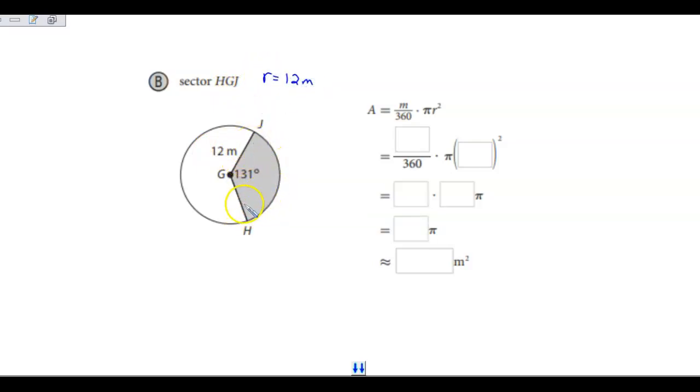I have a measure of JH is 131. So I'm going to take my 131 and divide it by 360 times pi times 12 squared, which I know 12 squared is 144.